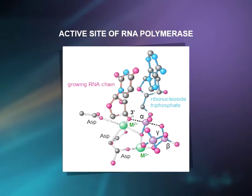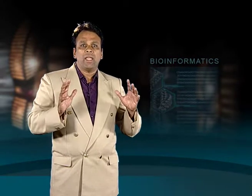The core enzyme contains the catalytic site, which contains two metal ions, specifically magnesium. In its active form, one metal ion remains bound to the enzyme while the other appears to come in with the nucleoside. Three conserved aspartate residues of the core enzyme participate in binding these metal ions at the catalytic site. The overall structure of RNA polymerase and DNA polymerase are quite different; their similar active sites are products of convergent evolution.